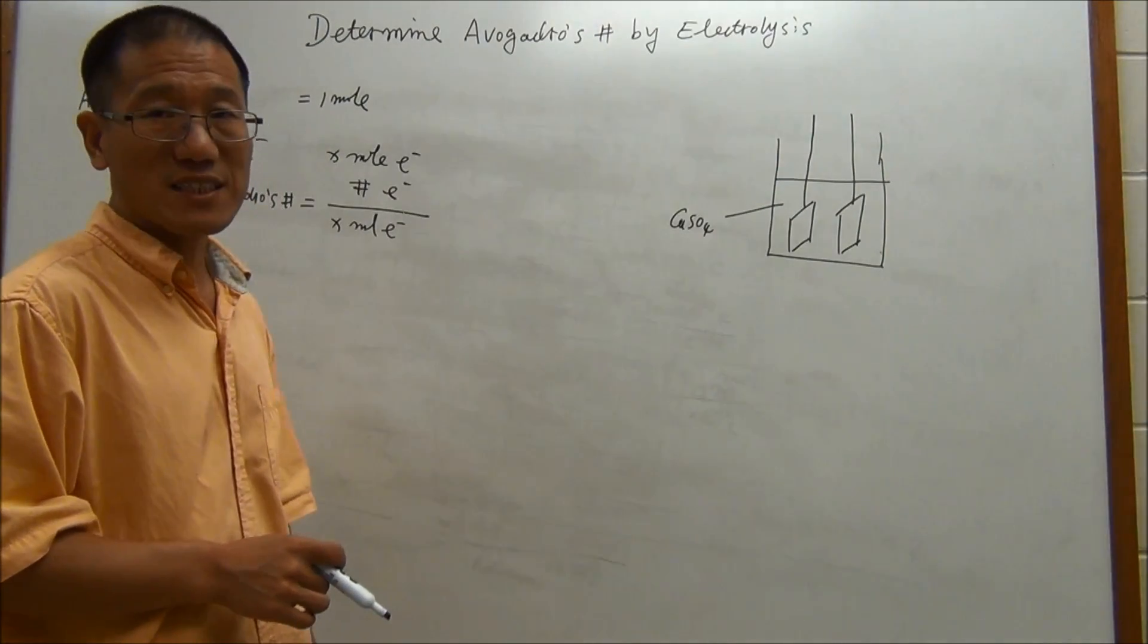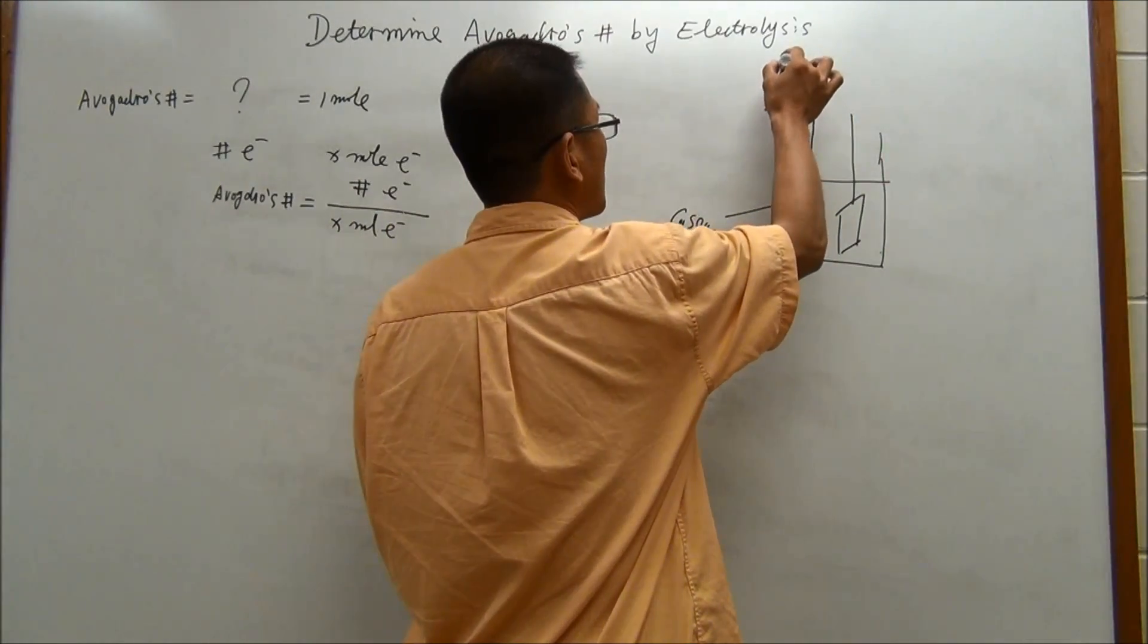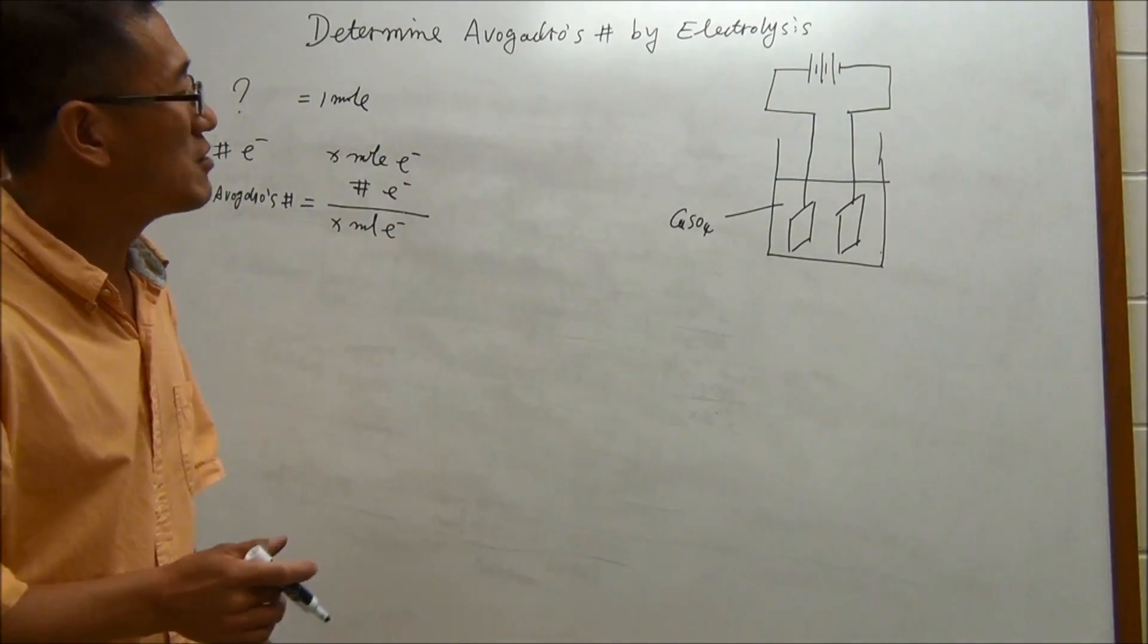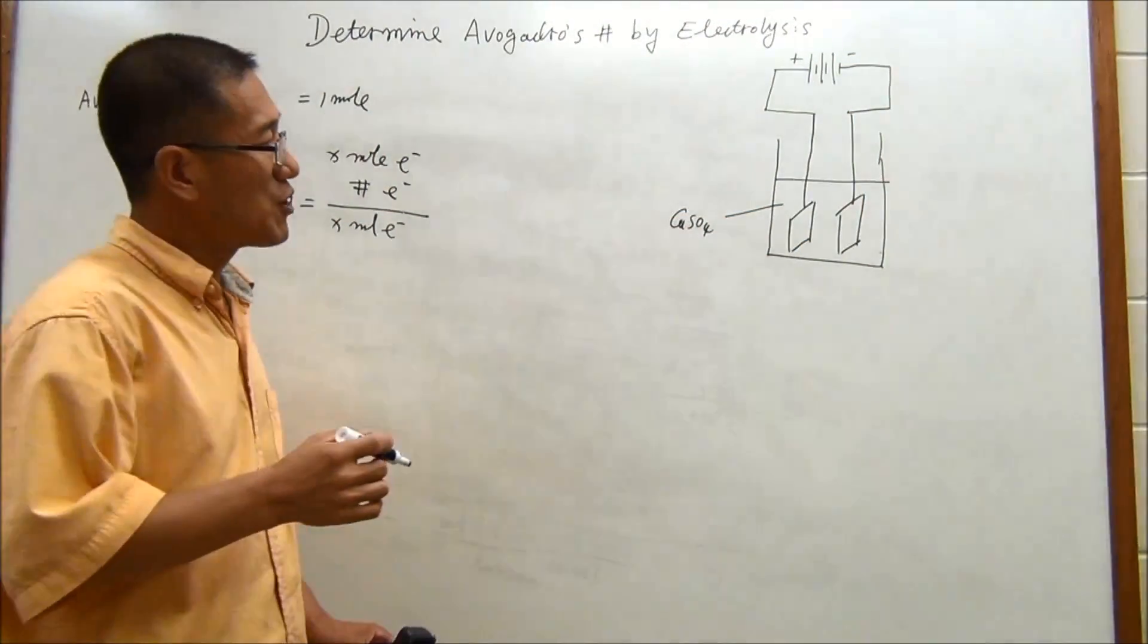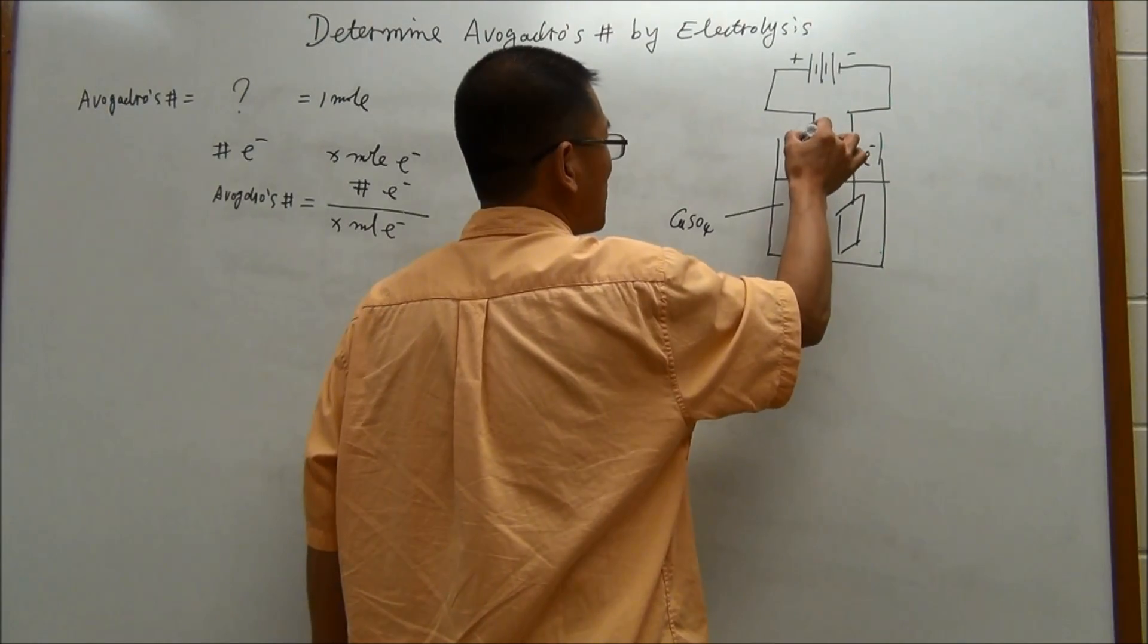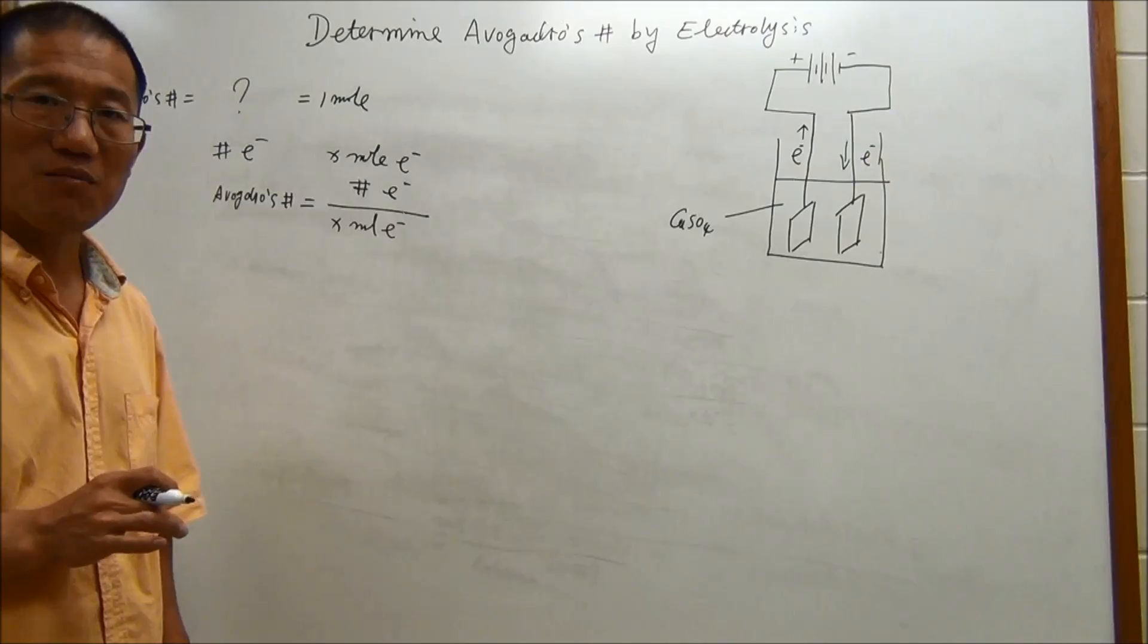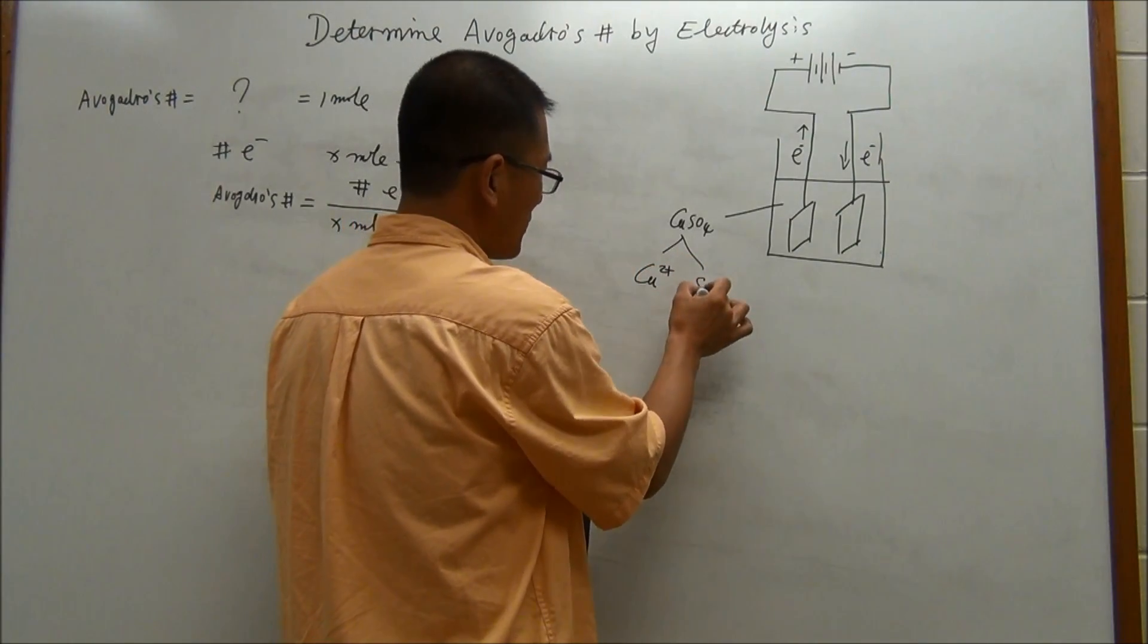Since this method is called electrolysis, you have to have a power supply. And this power supply is a DC power supply, so it has positive and negative. This is positive and this is negative. We know that from physics, electrons will flow from the negative, go to the positive. Copper sulfate, when you put it into solution, because this is an ionic compound, it will produce ions, which can be copper and sulfate ions.